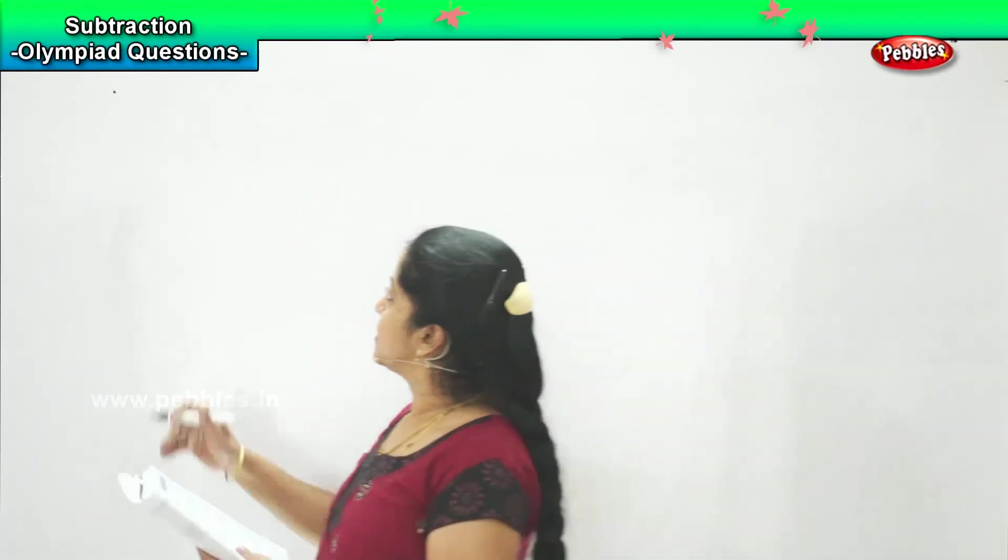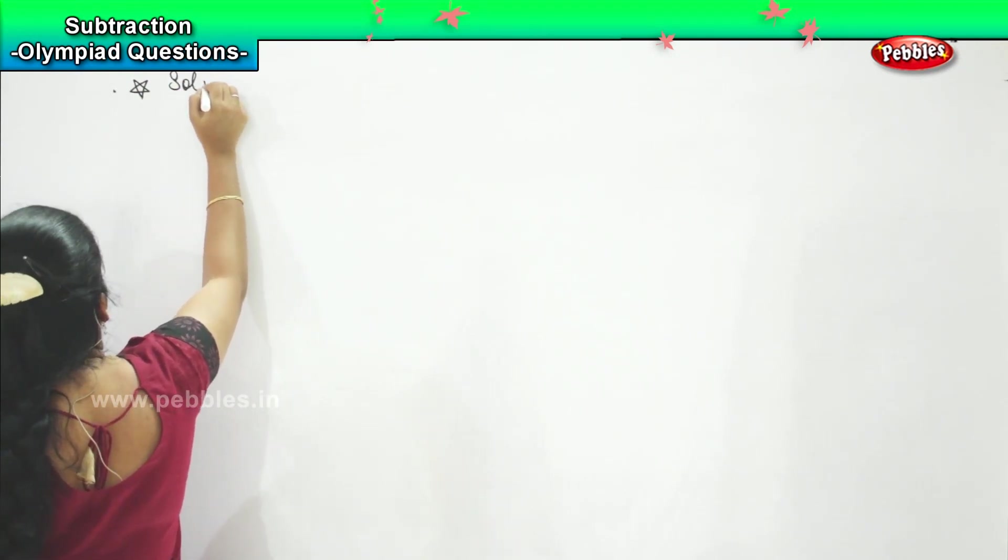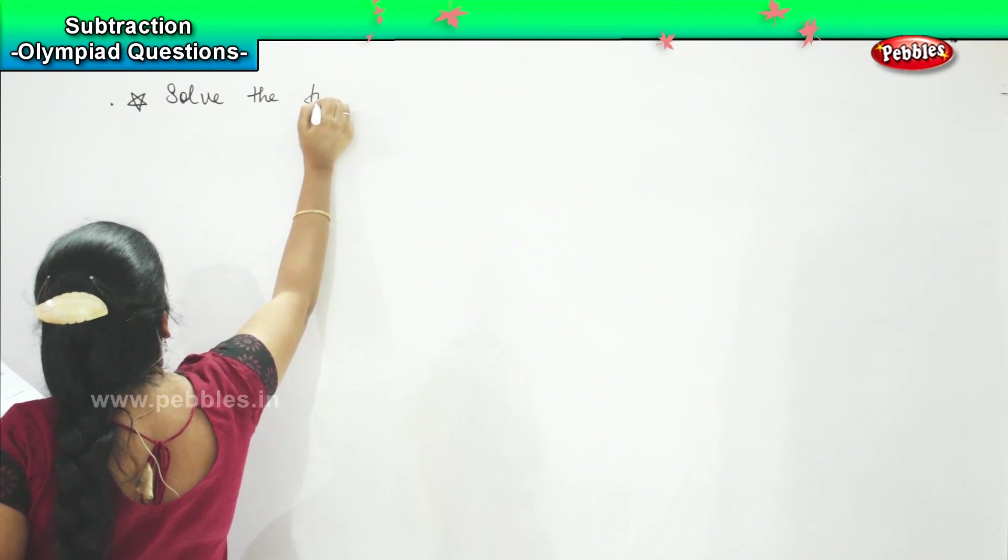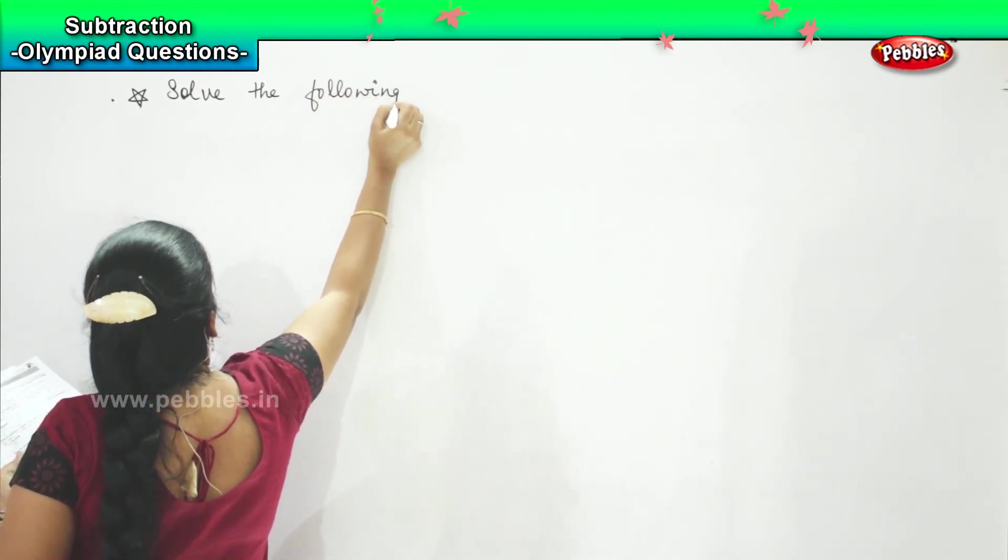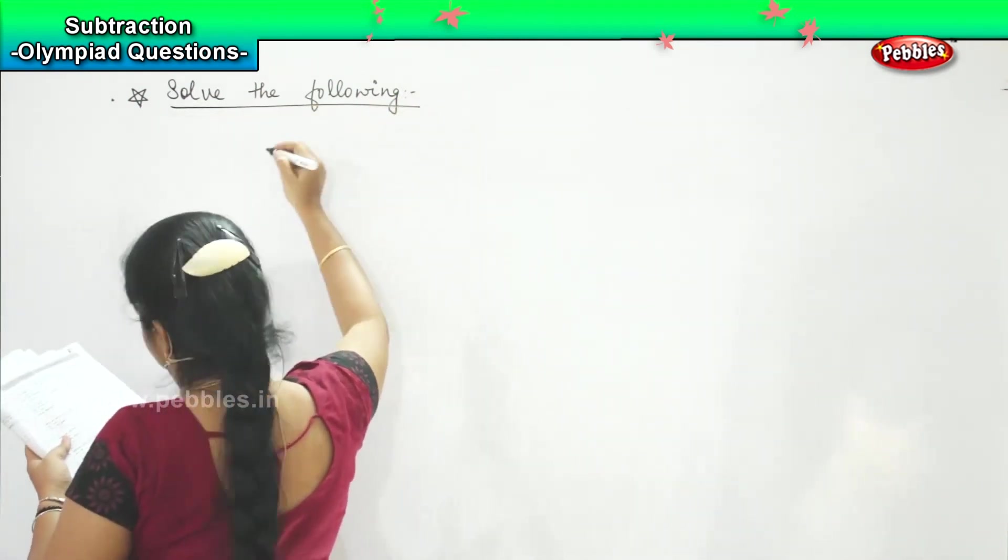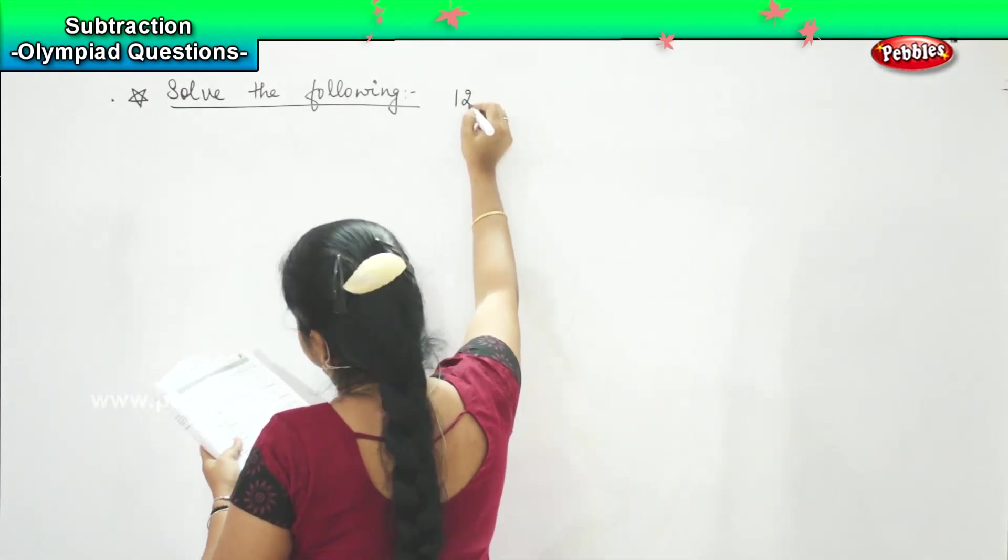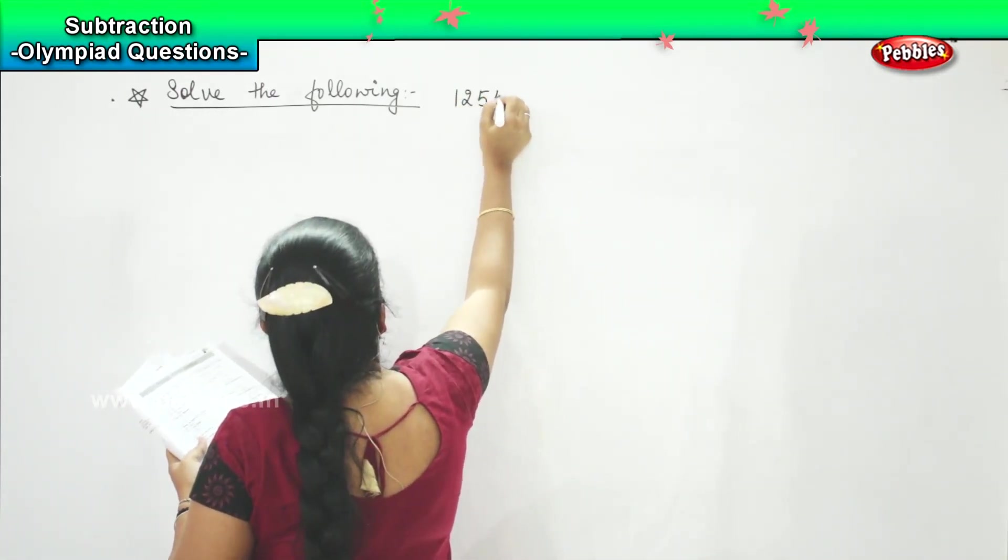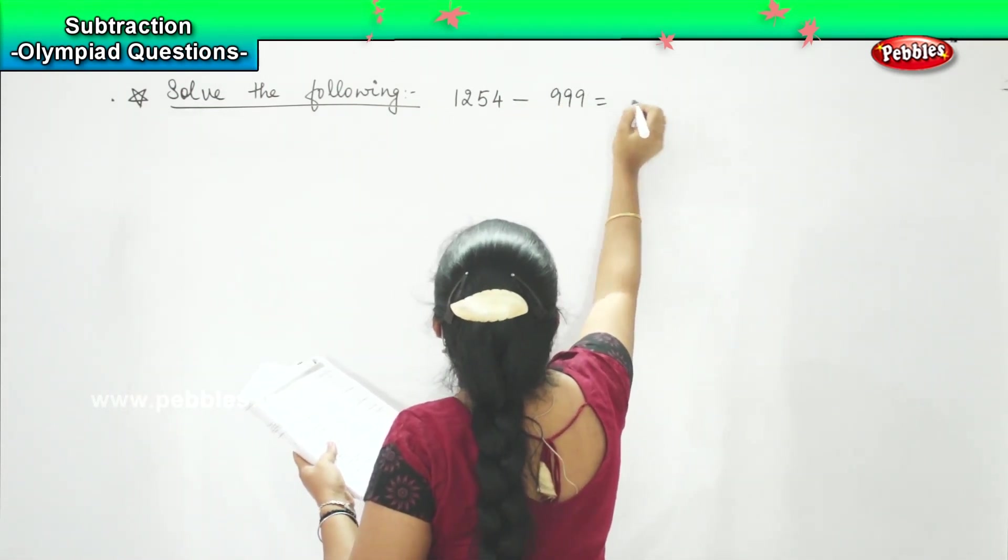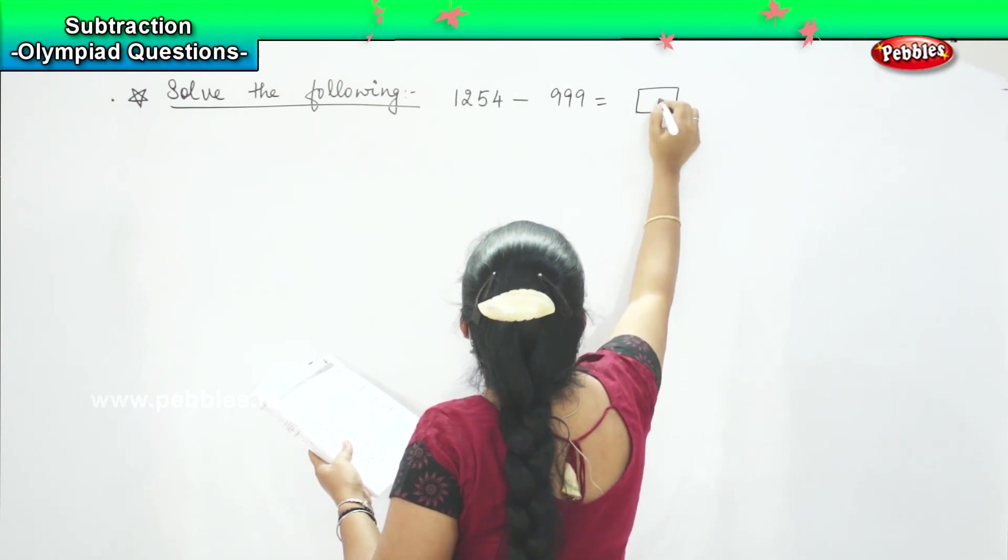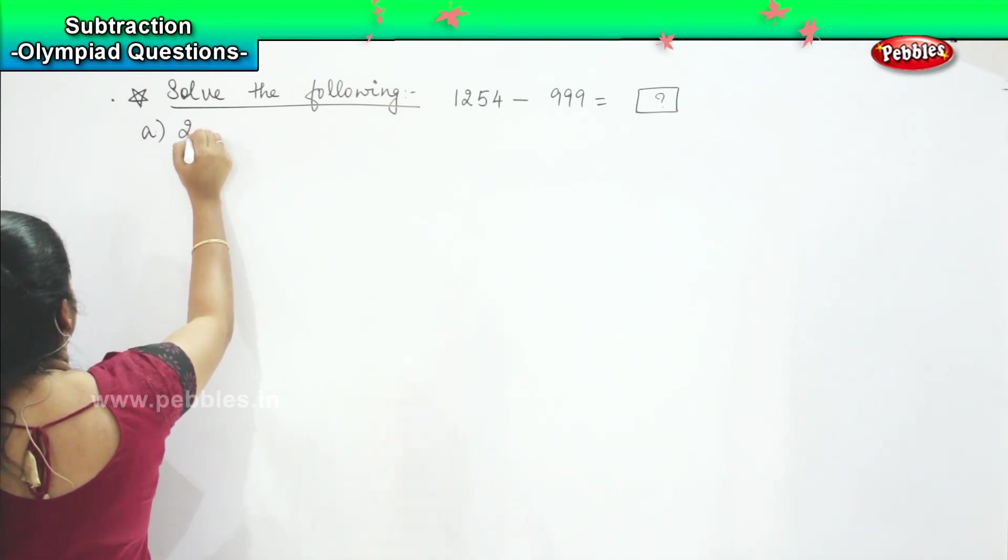The next question for you is, solve the following. And the question asked is, 1254 minus 999 is equal to something. Your options are 255,